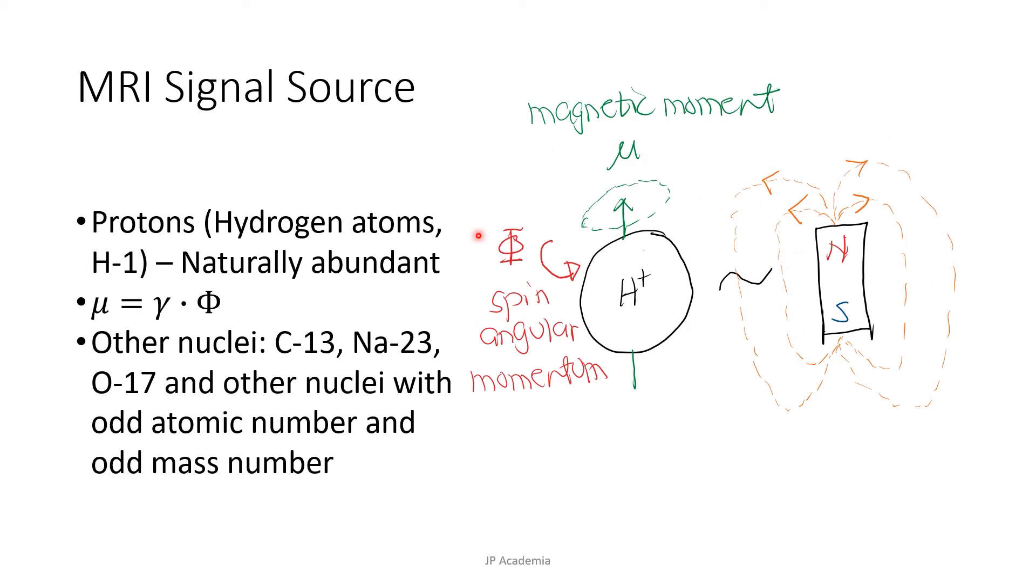A nucleus with either an odd atomic number or an odd mass number has an angular momentum called the spin. Other examples of nuclei that can be used for MRI are C-13 or carbon-13, sodium-23, and oxygen-17.